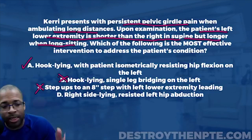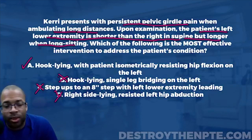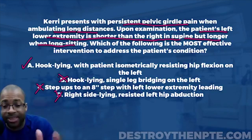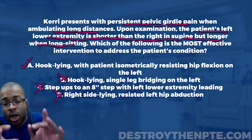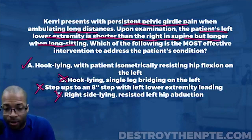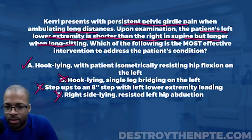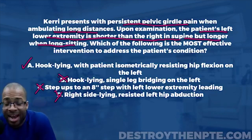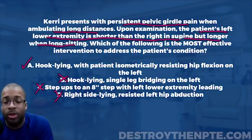Looking at what we have, the final answer is A: hook lying with the patient isometrically resisting hip flexion on the left. If you got this wrong, it's an area where many students struggle because you have to understand the supine to sit test, what it means when the leg goes from short to long or long to short, and then determine which intervention will address that finding. There are quite a few steps to get to the right answer.